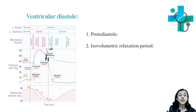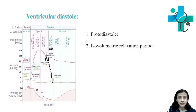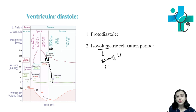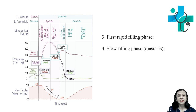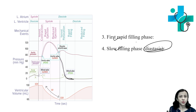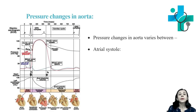Then isovolumetric relaxation phase: there is a further sharp decrease in intraventricular pressure. At the beginning of isovolumetric relaxation, left intraventricular pressure is 80 mmHg, and it falls down to 2 to 3 mmHg. Next is rapid filling phase. After isovolumetric relaxation, filling of the ventricle takes place but without much increase in pressure, because the ventricles are relaxing. During both rapid and slow filling phases — slow filling is also known as diastasis — ventricular pressure is slightly above 0.